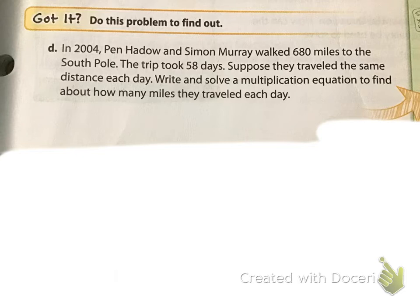For D, let's look at D together. It's a little harder. In 2004, Pen Hadow and Simon Murray walked 680 miles to the South Pole. The trip took 58 days. Suppose they traveled the same distance each day. Write and solve a multiplication equation to find out how many miles they traveled each day.